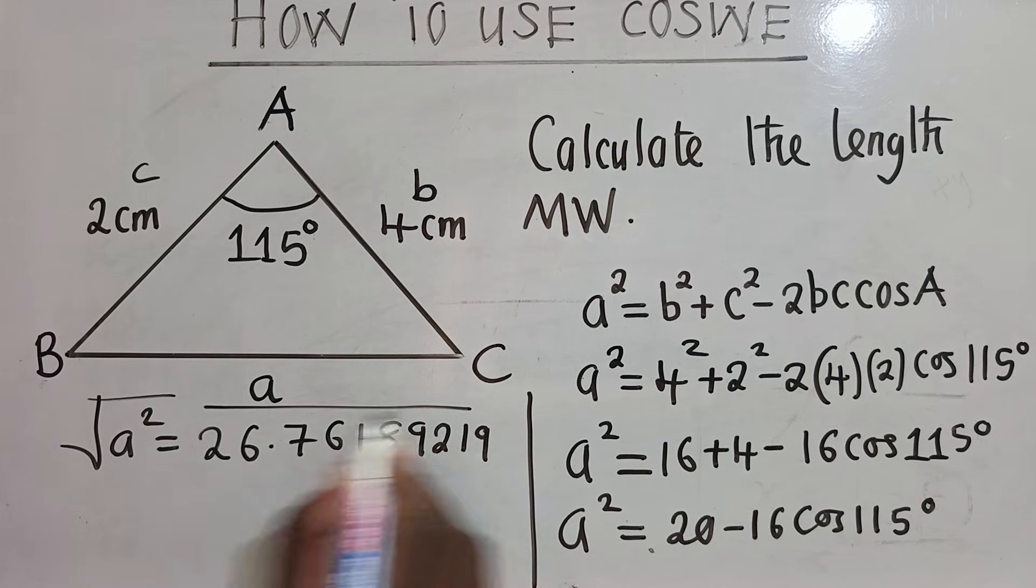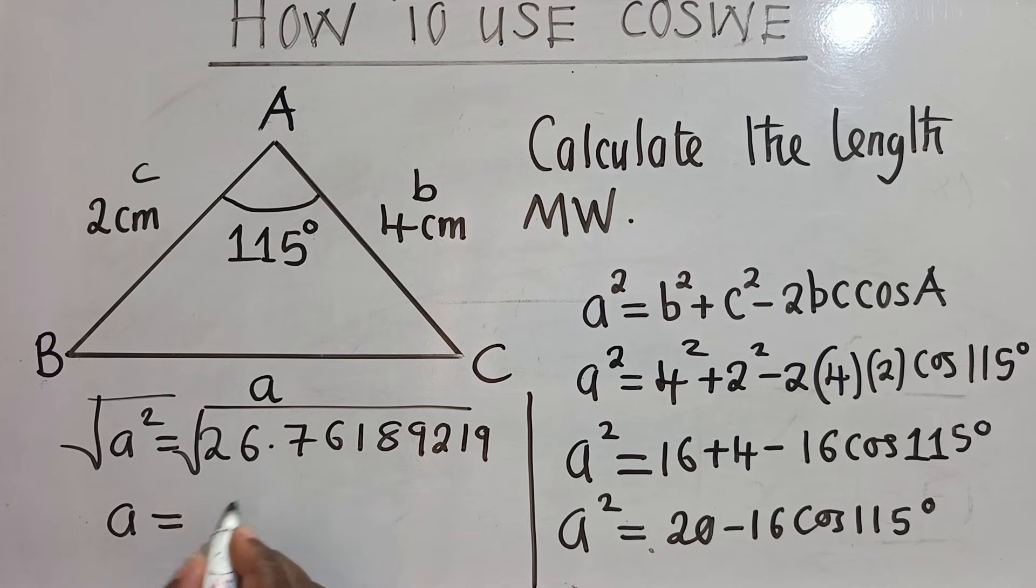And then a here will simply be equal to, when you find the square root of this, it will be 5.17318975. So I'll write my answer in three significant figures. And this will be 5.173.